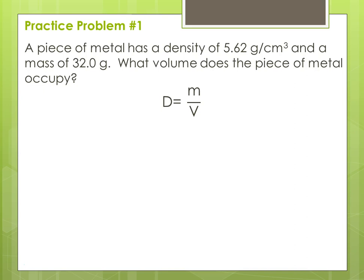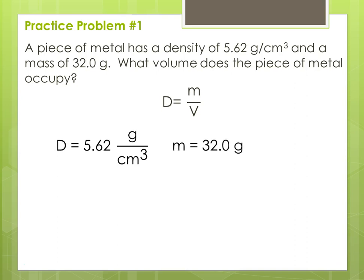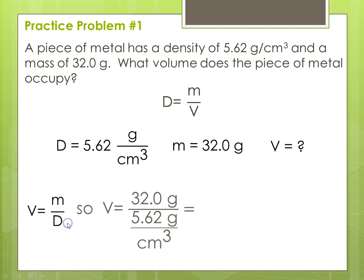Then we need to identify variables. They give us the density — the 5.62 grams per centimeter cubed — and they've given us the mass, that's the 32 grams. Whenever you see grams, it means mass. And what we're solving for, our unknown, is volume. So now we're going to need to rearrange the equation so that we're solving for v. In that case, v is going to be mass over density. Plugging in the numbers, we've plugged in our value for mass and our value for density.